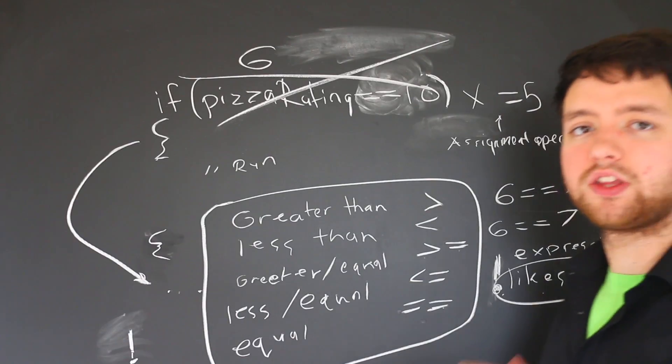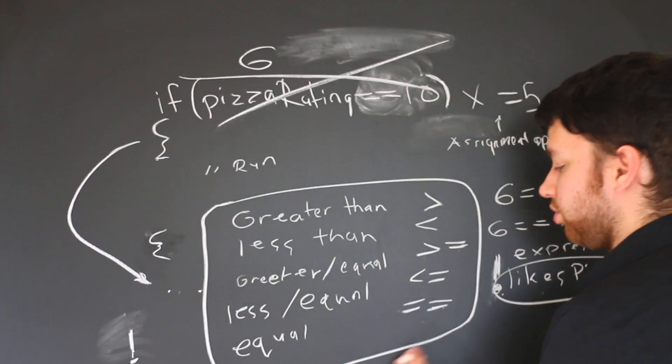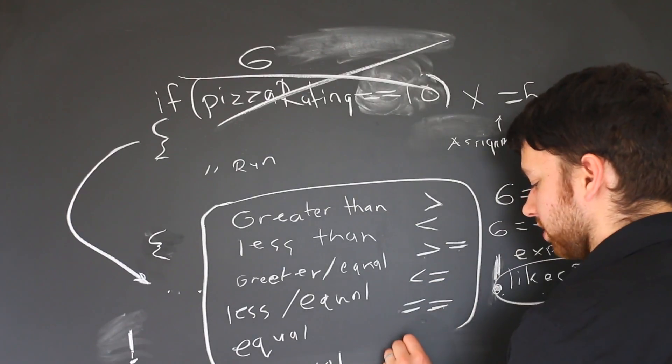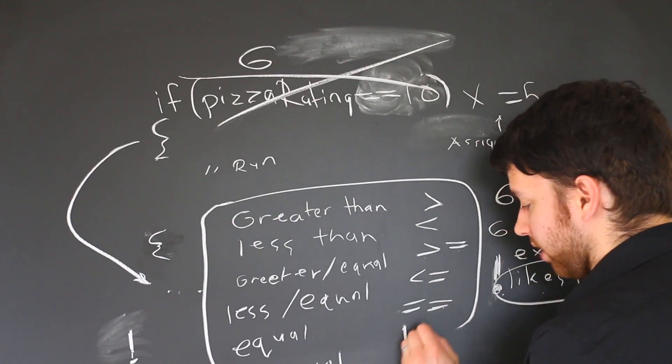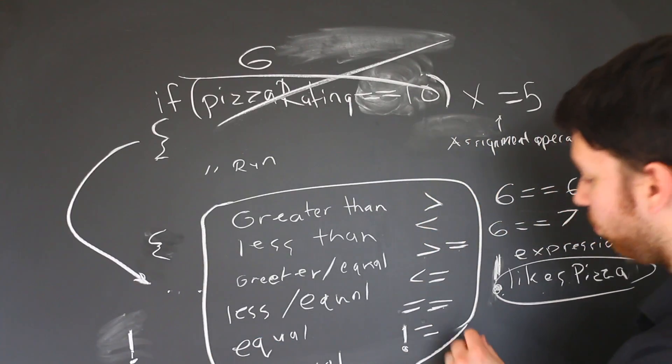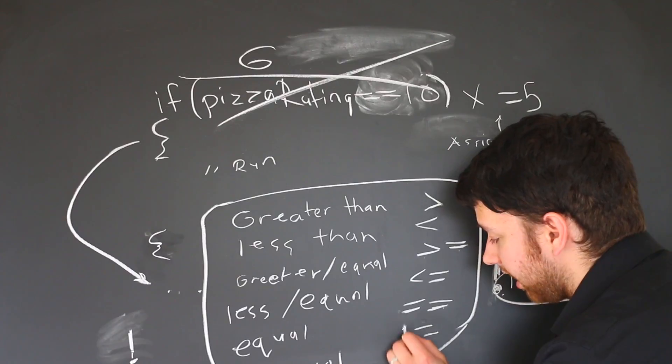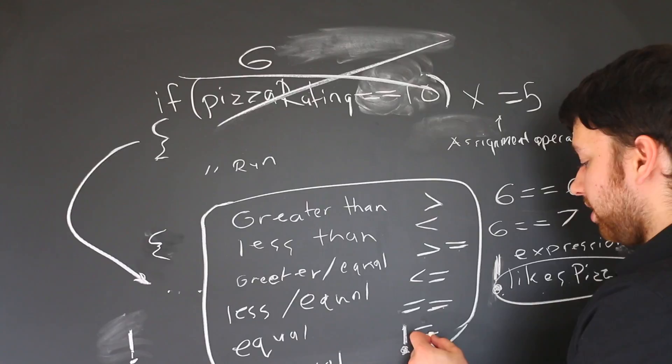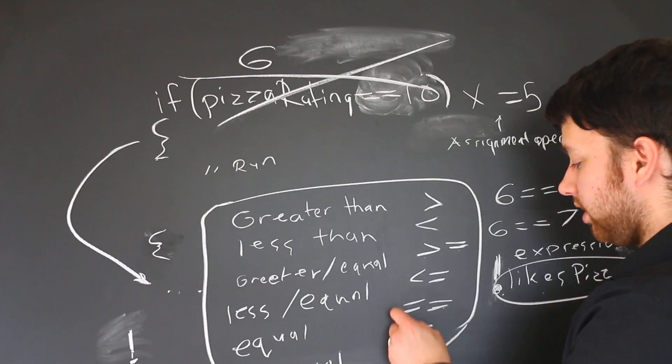But the reason I'm calling that out is because there's actually another one you should know about, and that is not equal, which looks like this. And it's odd because you actually only have one equal sign here. So you just got to remember that it's one equal sign if you're using the negative, it's two equal signs if you're using no negative.